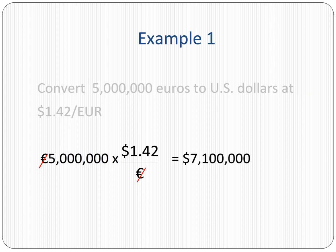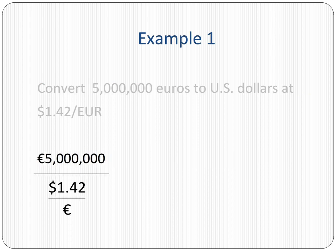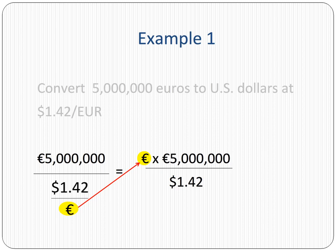This is exactly what we wanted, so multiplication was the right thing to do. Let's see what would have happened had we tried to divide the amount of 5 million euros by the exchange rate. Since we would have had the euro in the denominator of the denominator, we would rearrange it as euro multiplied by 5 million euros divided by $1.42.